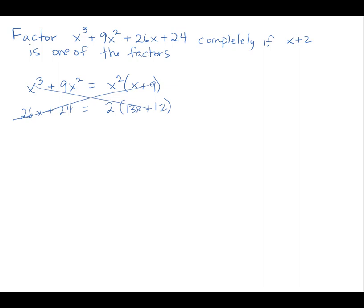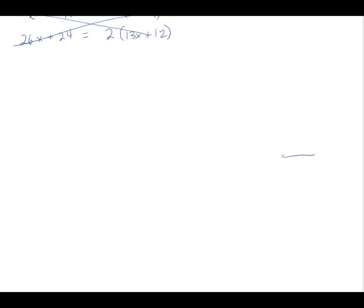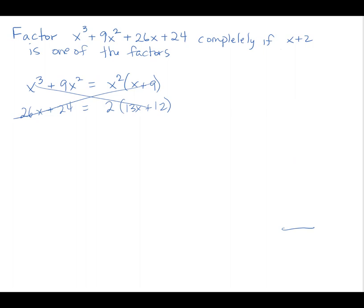We can use long division. If (x + 2) is a factor, then we will have no remainder. We'll get the quotient, and if there is no remainder, that confirms x + 2 is indeed a factor. So let's try: (x + 2) divides into x³ + 9x² + 26x + 24.